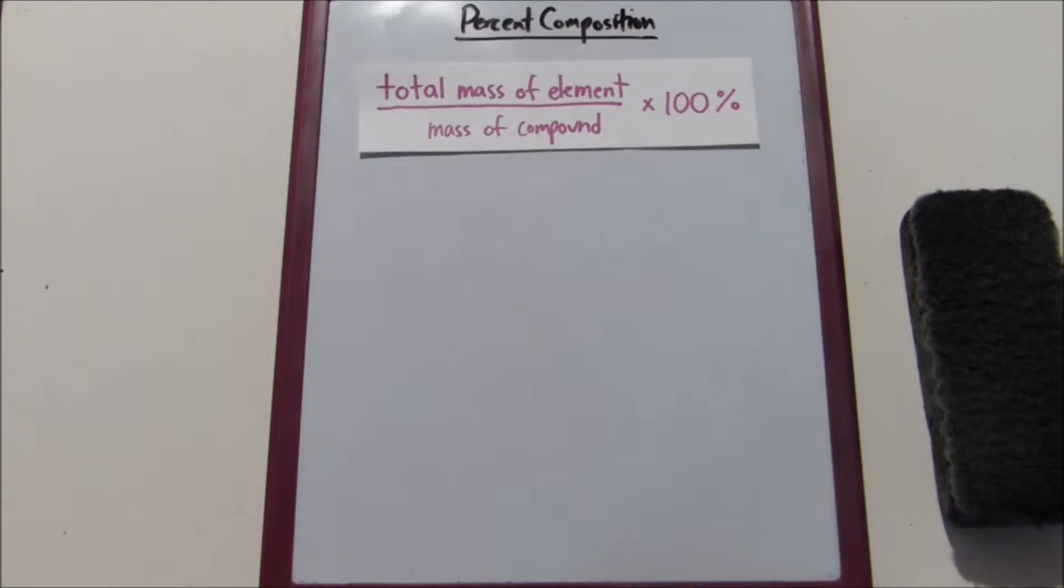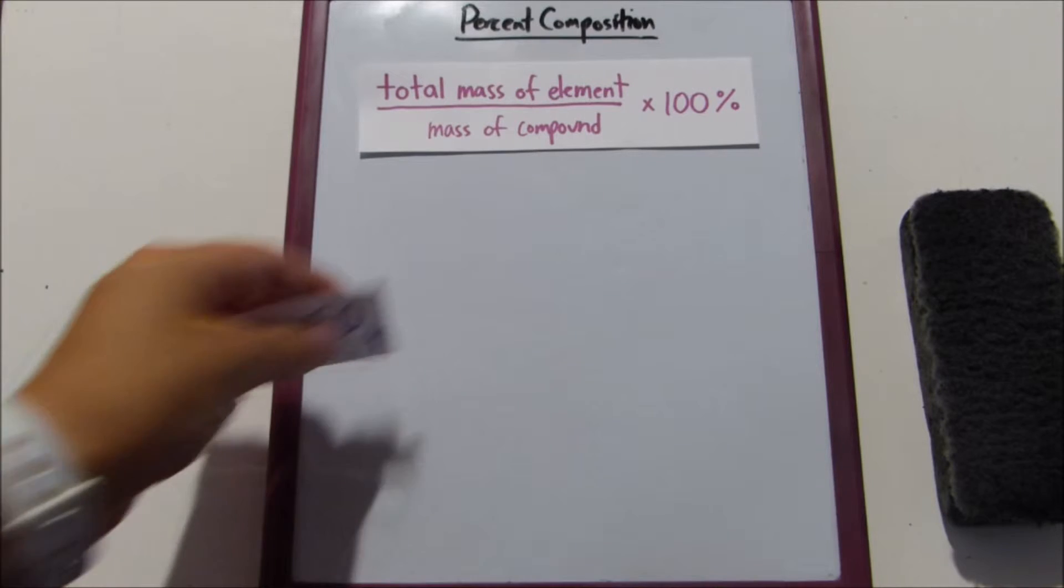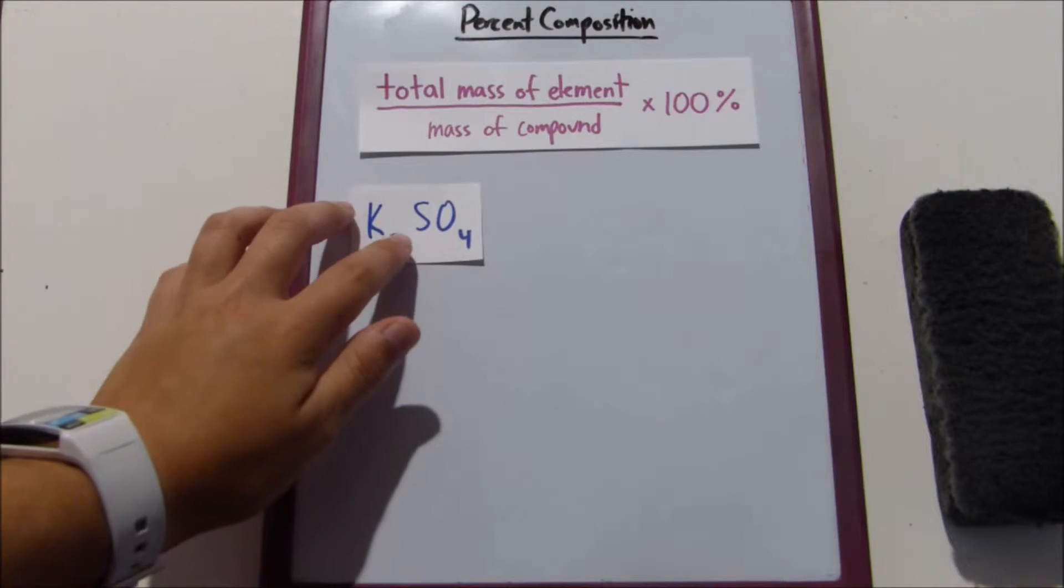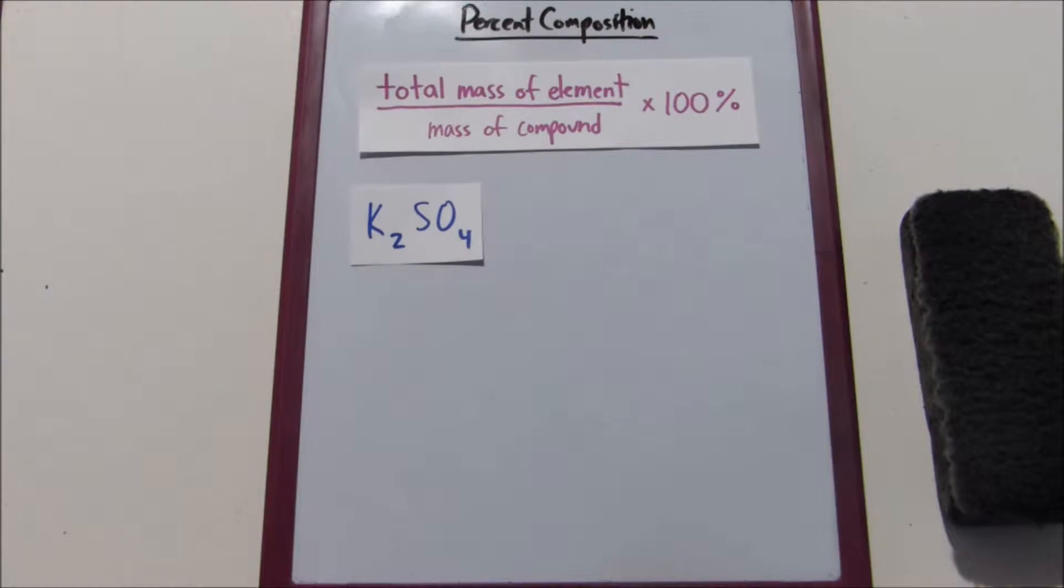So basically there's three different steps here. First, we want to find the total mass of the element. So say we have something like our potassium sulfate here. And we're asked to find the mass percentage of our oxygen.